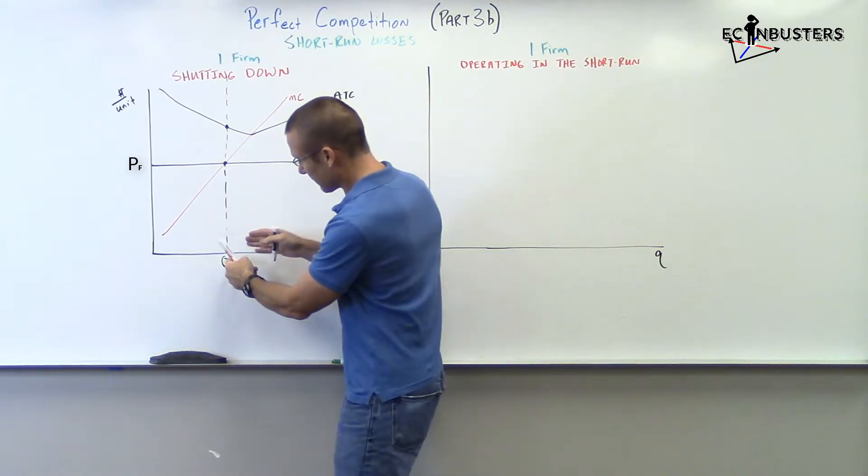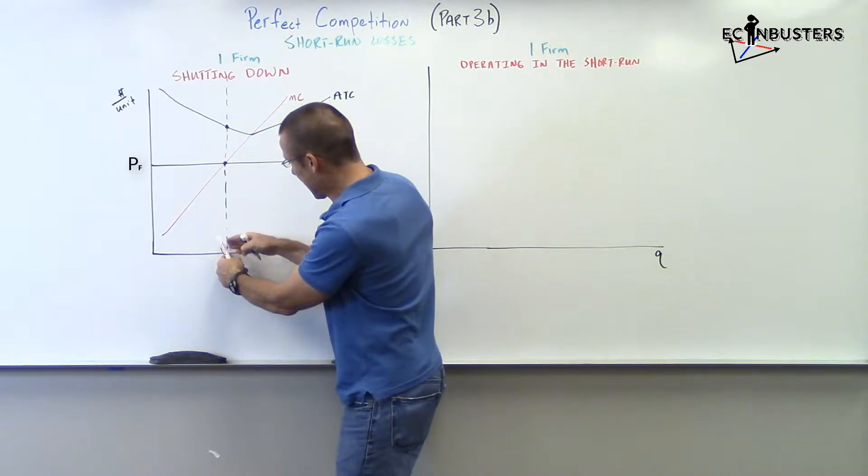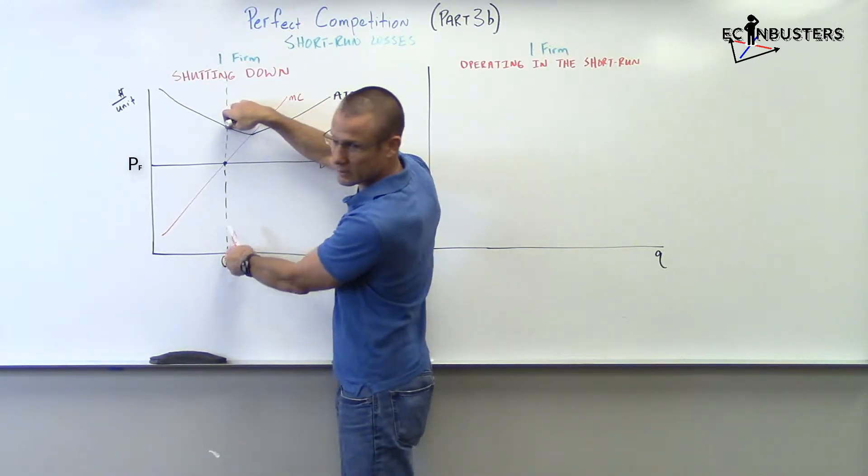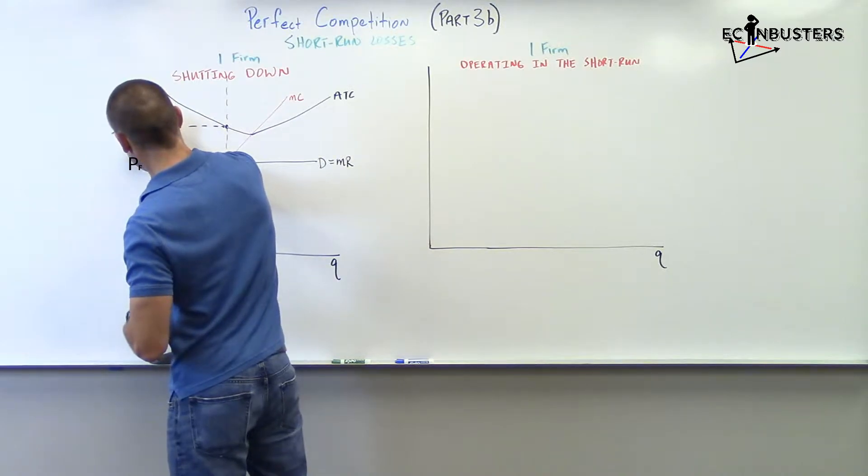For showing losses, we want to say, hey, that's the output level. That's how much we're making. And at that output level, this vertical distance, that's the ATC. So, I draw this back over. ATC.